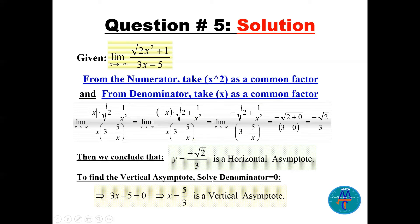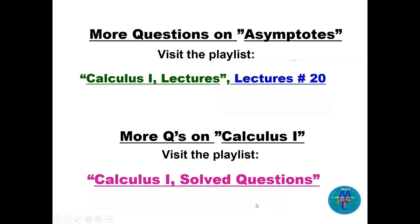For the vertical asymptote, set the denominator equal to zero: 3x - 5 = 0, so x = 5/3 is the vertical asymptote. For more questions on asymptotes, see lecture number 20 in the Calculus One lectures, and for more general calculus questions, visit the Calculus One solved questions playlist.